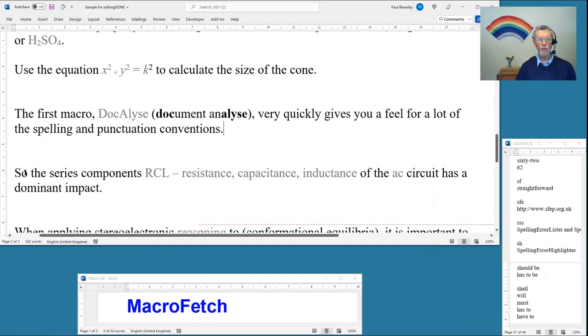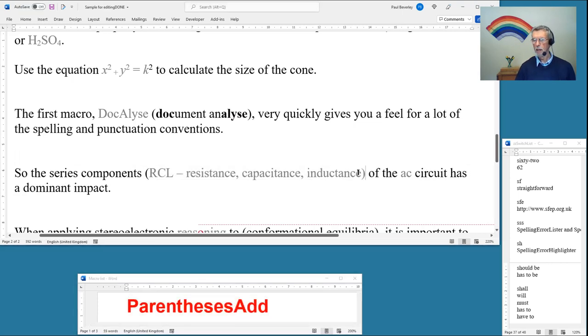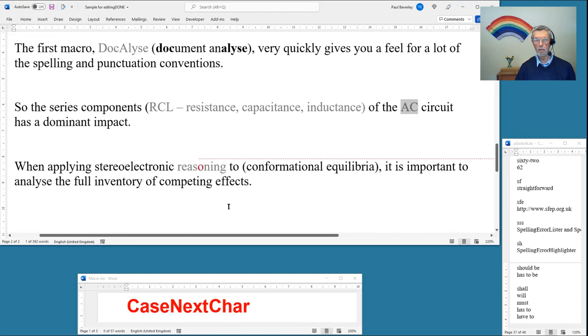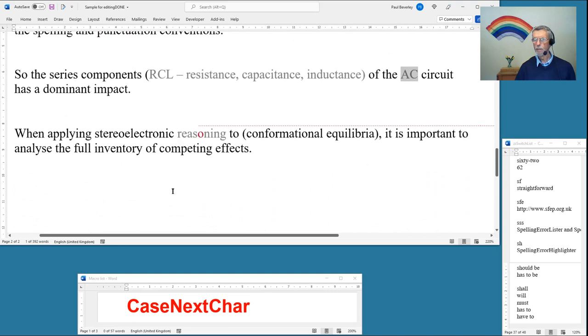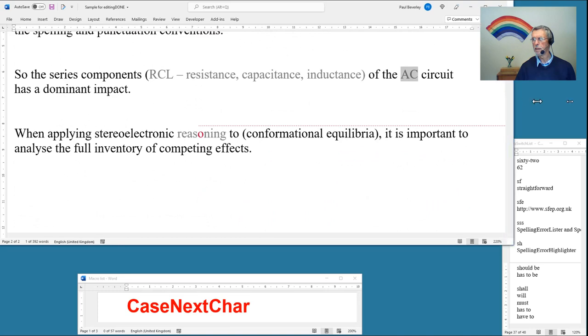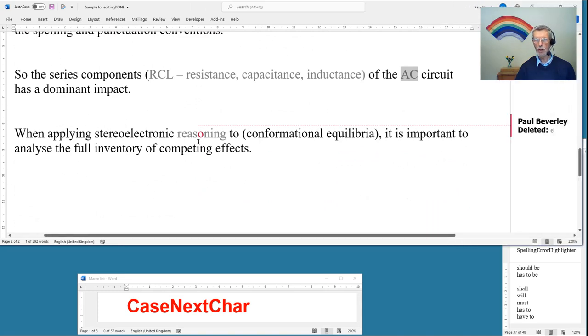There's a series of components (RCL - resistance, capacitance, inductance) of the AC circuit. Well, I want this with brackets around it, so I select it roughly, put parentheses round. I want that as uppercase, AC circuit, there we go.